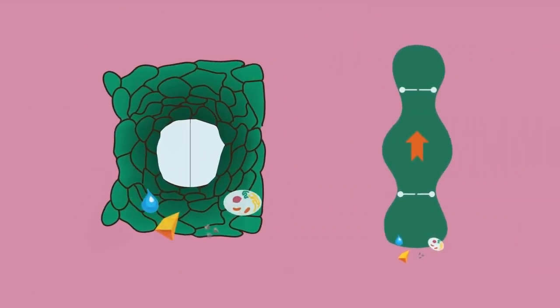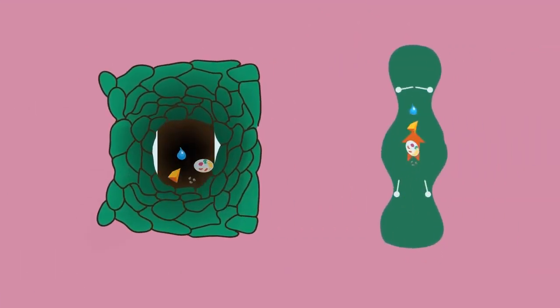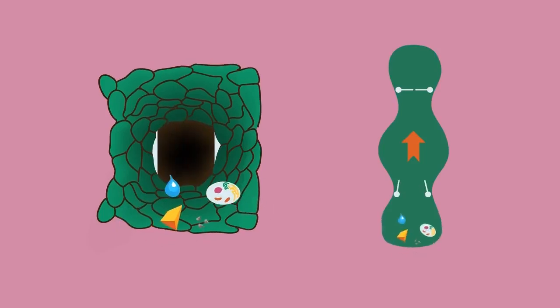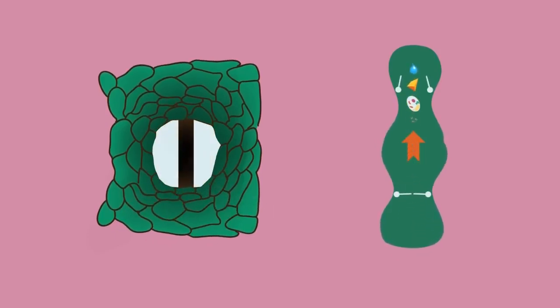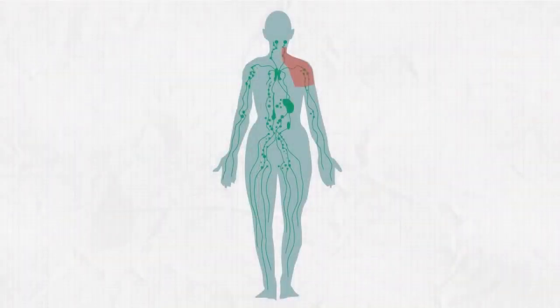The pumping happens because each little lymphatic vessel has valves at each end that keep the fluid moving in the right direction. The vessel squeezes to keep the fluid moving along. This is happening in millions of little lymphatic vessels in your body every minute of every day.